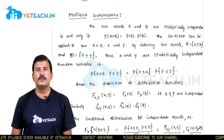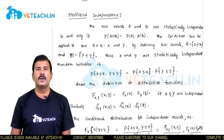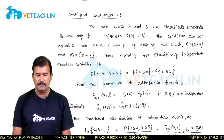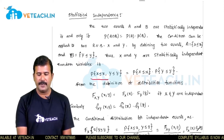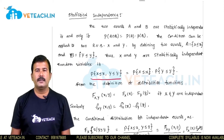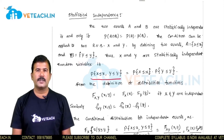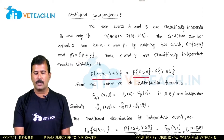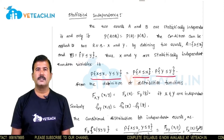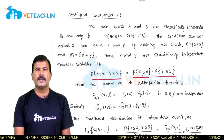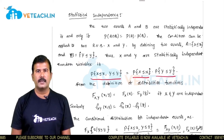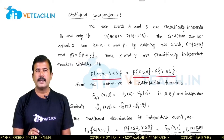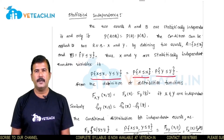The same concept can be extended to random variables. Two random variables x and y are statistically independent if and only if their joint event — defined as probability of x ≤ x comma y ≤ y — is equal to the product of individual probabilities: probability of x ≤ x into probability of y ≤ y. Then those two random variables x and y are called statistically independent.